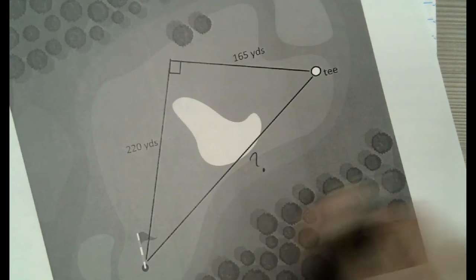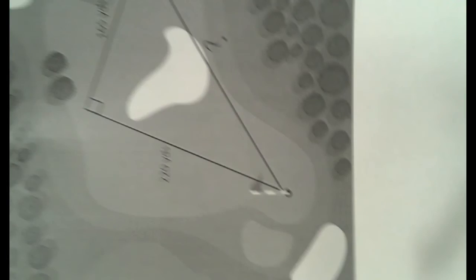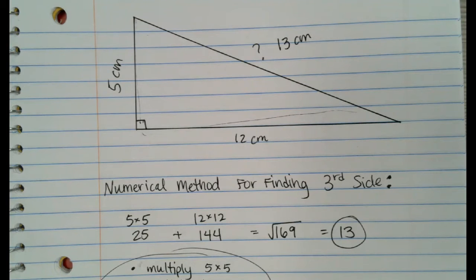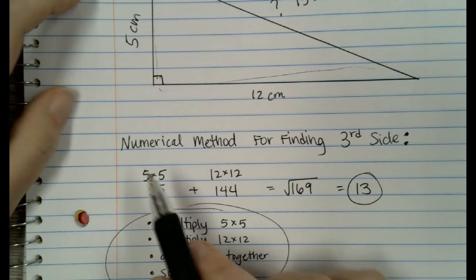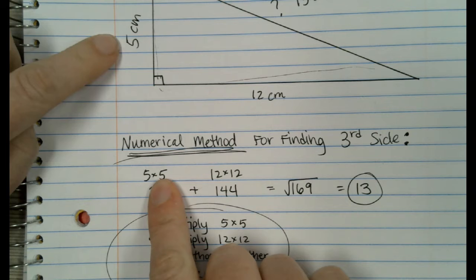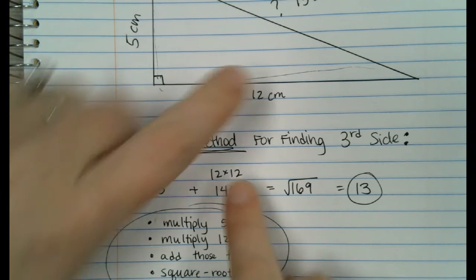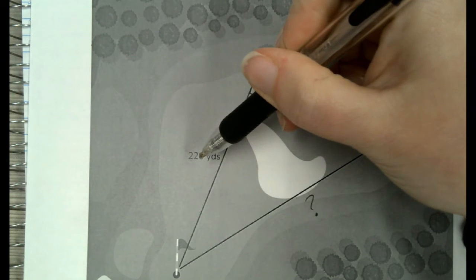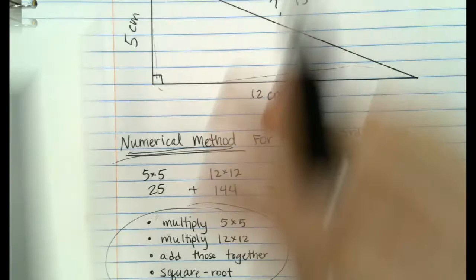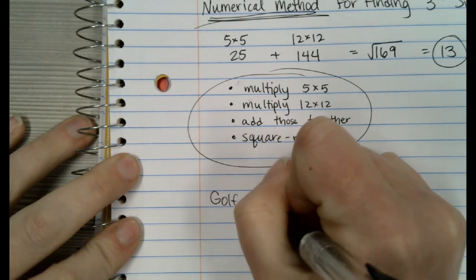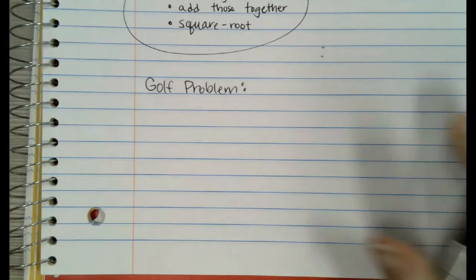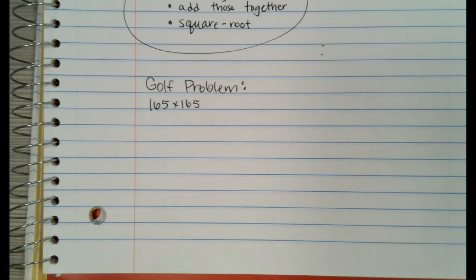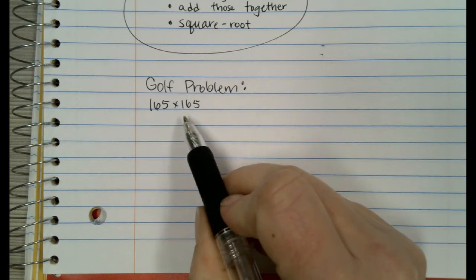If you'll notice, this is a right triangle — very similar to the method I just used. So we're going to use our numerical method to solve this problem. You multiply one side by itself, multiply the other by itself, add them together, then square root. So in my golf problem, we're going to multiply 165 by itself. And 165 times 165 — the same as 165 squared — gives us 27,225.